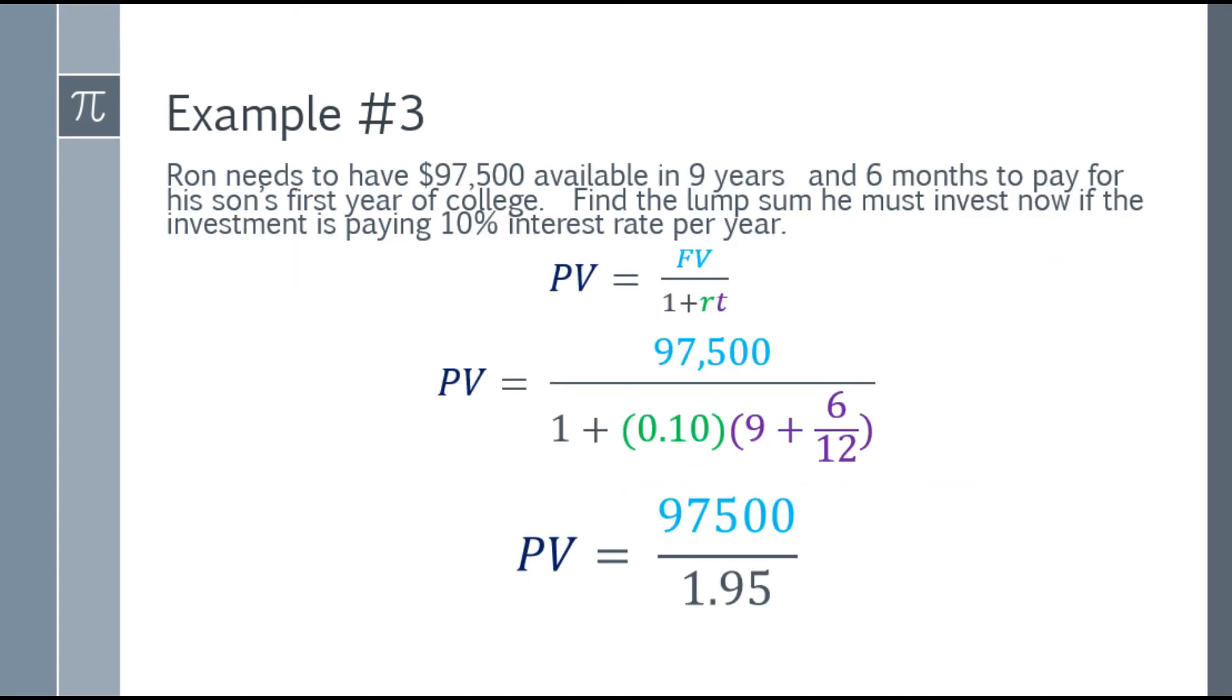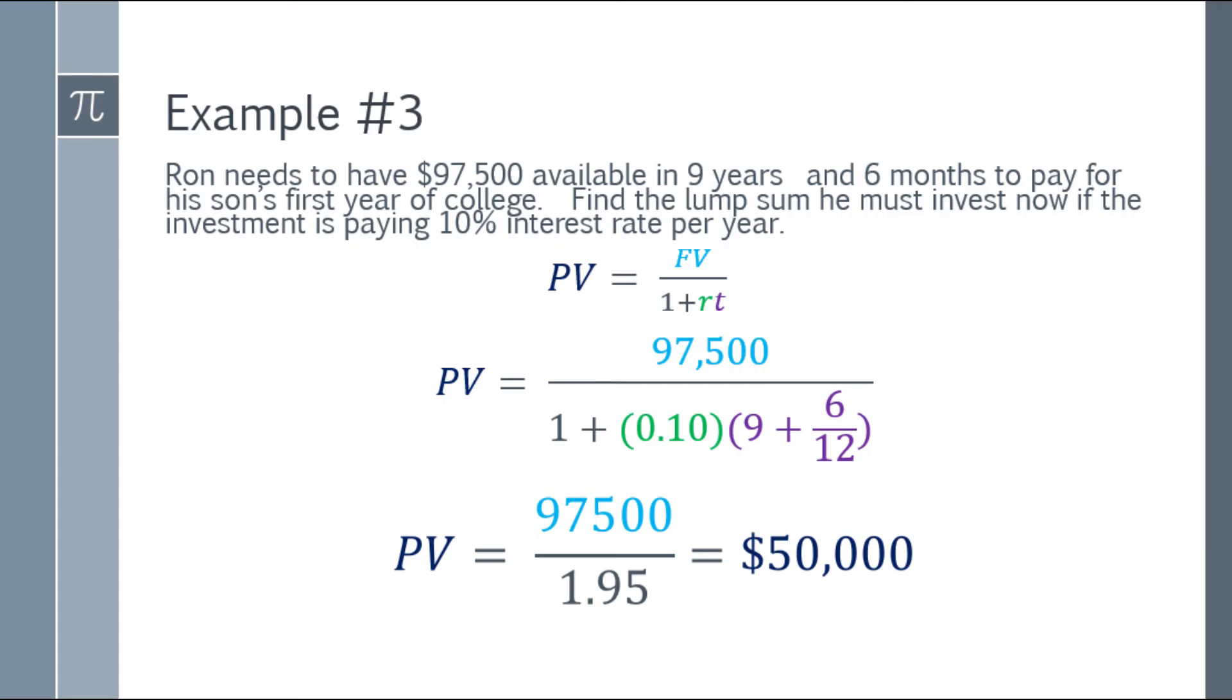Now let's simplify the denominator. 6 over 12 is 0.5. Plus 9, that's 9.5. Then times 0.1. And you add 1 there, you will get 1.95. Now, let's simplify. 97,500 over 1.95. The answer is $50,000. So if he wants to get 97,500 after 9 years and 6 months, and there's an investment giving 10% interest rate per year, he needs to invest $50,000. That's the present value.